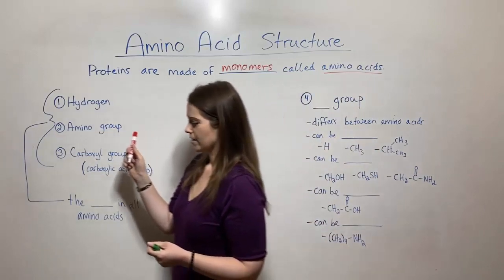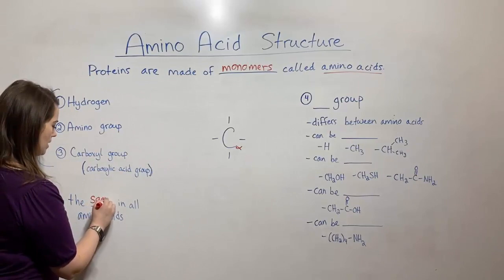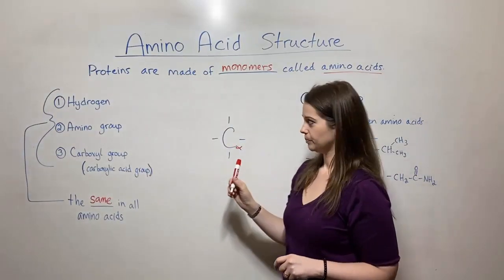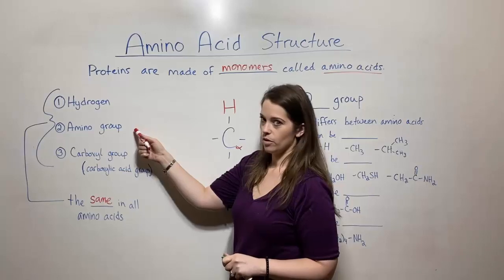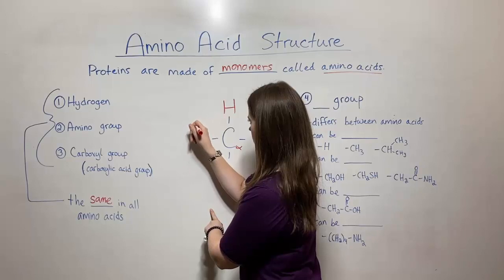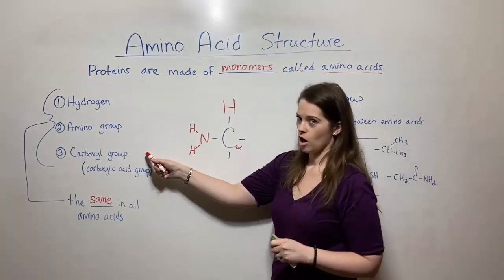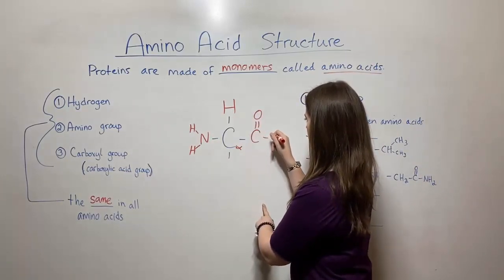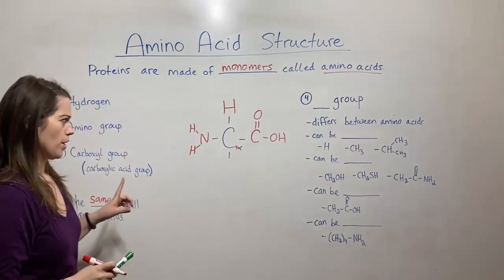Now three of these are the same in all amino acids. So in all amino acids these three groups are present. You've got the hydrogen, I'll put it here on top, an amino group, I'll put it right here, and a carboxyl group. I'll put it over here.